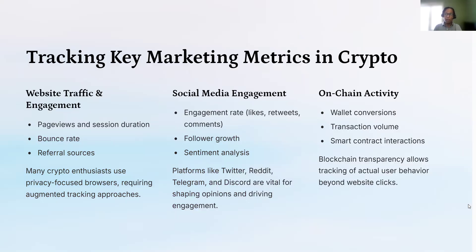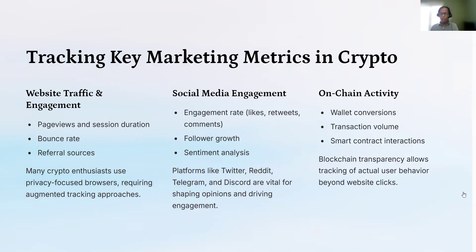Another important aspect is social media engagement. Whether it is Twitter, Discord, or Telegram channels, you need to collect that data as well and integrate it with your Web2 and Web3 data. On-chain activity refers to transactions and token purchases stored in the blockchain, while off-chain activity includes social media campaigns and web marketing campaigns. You need to collect both to create a unified view of your customer and understand how well your marketing campaigns are performing.